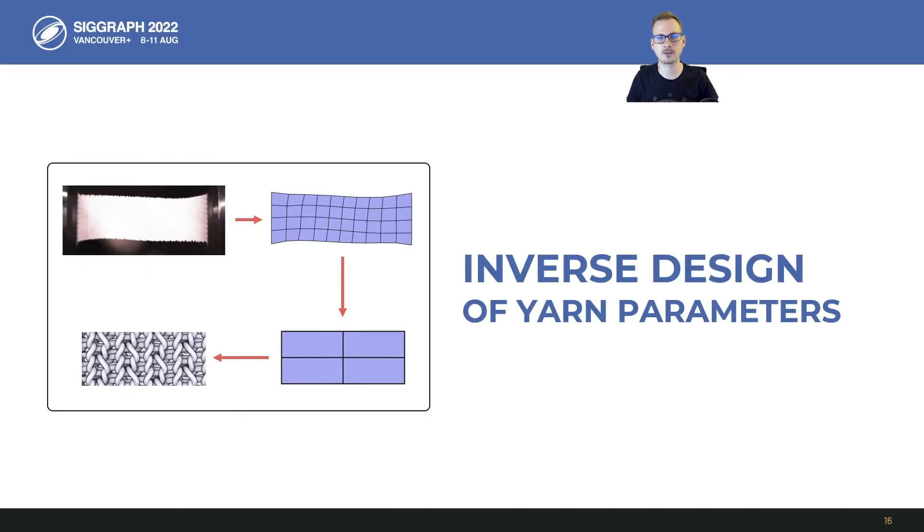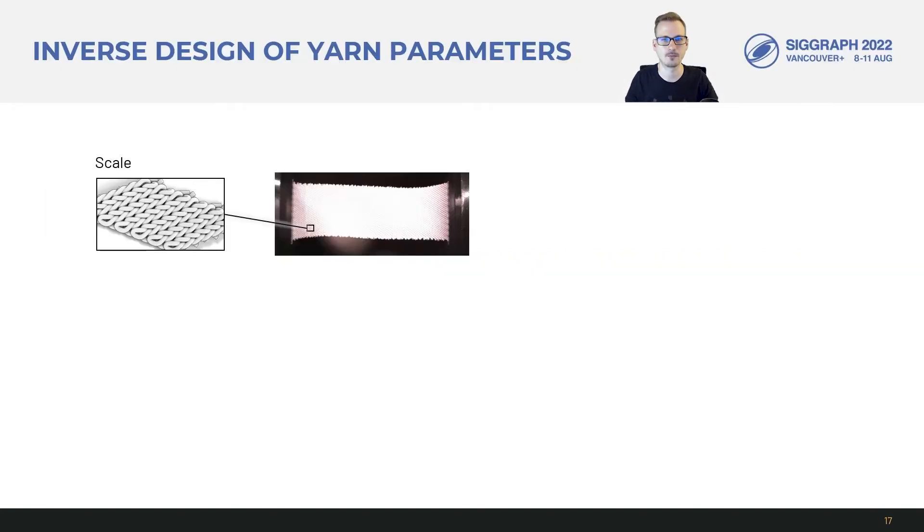With the dataset ready, we can use it for our goal of fitting yarn material parameters to explain the large-scale response of real fabric. As mentioned before, because of the scale of fabric tests, it is not feasible to directly simulate those as yarns in an optimization context. It is also not trivial to accurately model the boundary conditions.